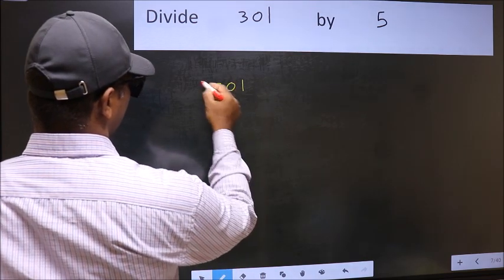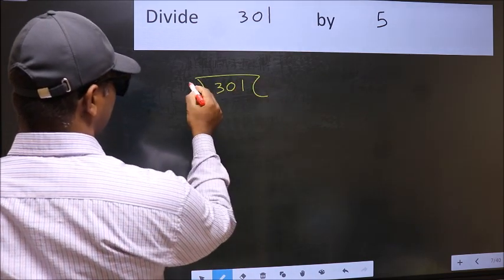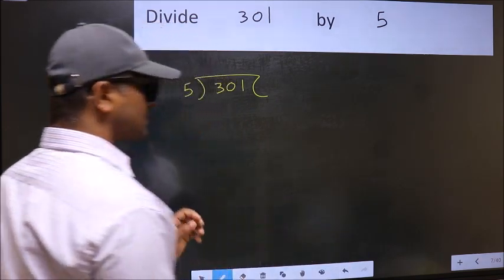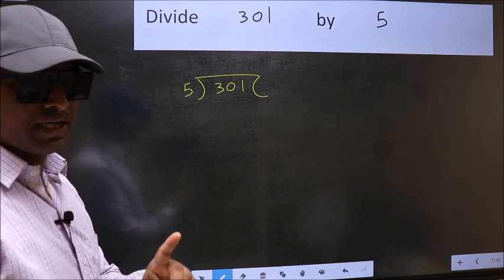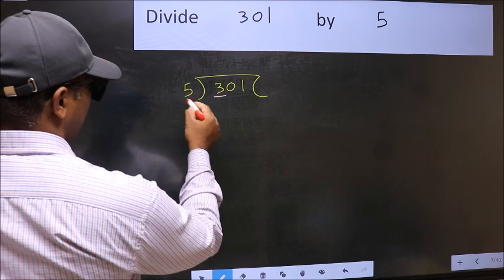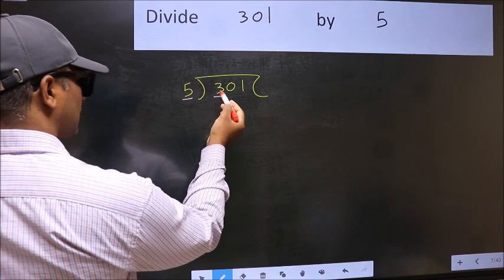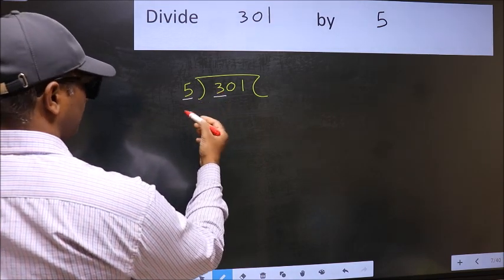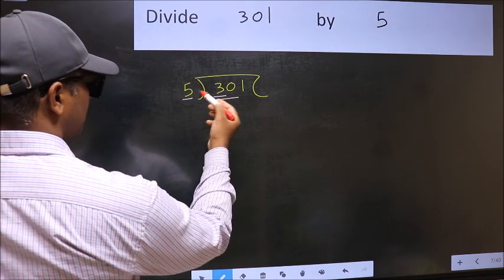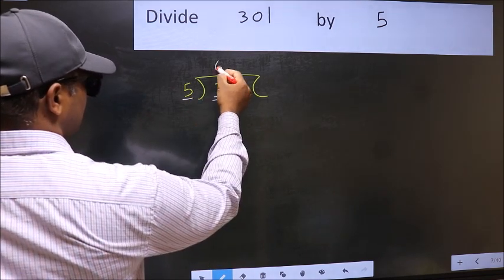301 and 5 here. This is your step 1. Next, here we have 3 and here 5. 3 is smaller than 5, so we should take 2 numbers, 30. When do we get 30 in 5 table? 5 times 6, 30.